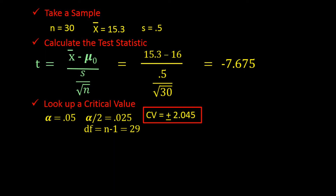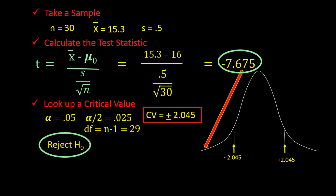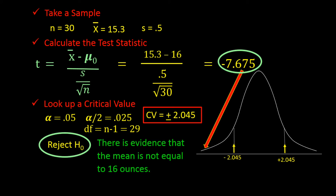The critical value splits the rejection and non-rejection regions. We have a test statistic of minus 7.675 and a critical value of plus and minus 2.045. Comparing the test statistic with the critical value, it falls well into the rejection region, so our decision would be to reject the null hypothesis and conclude that the mean fill is not equal to 16 ounces.